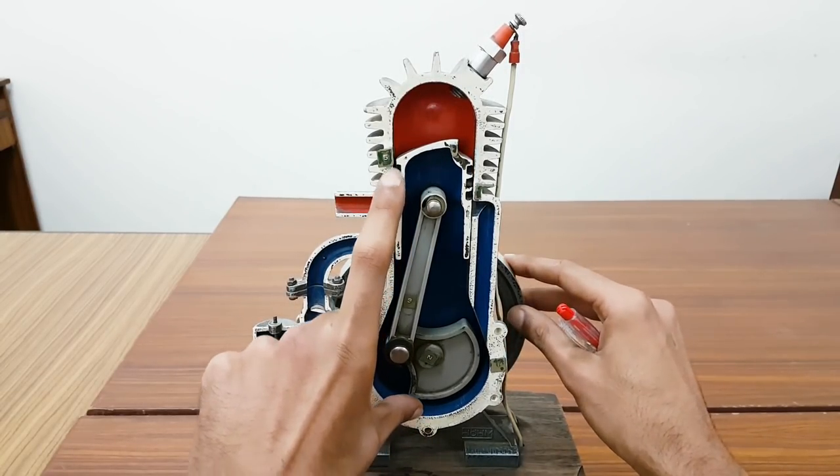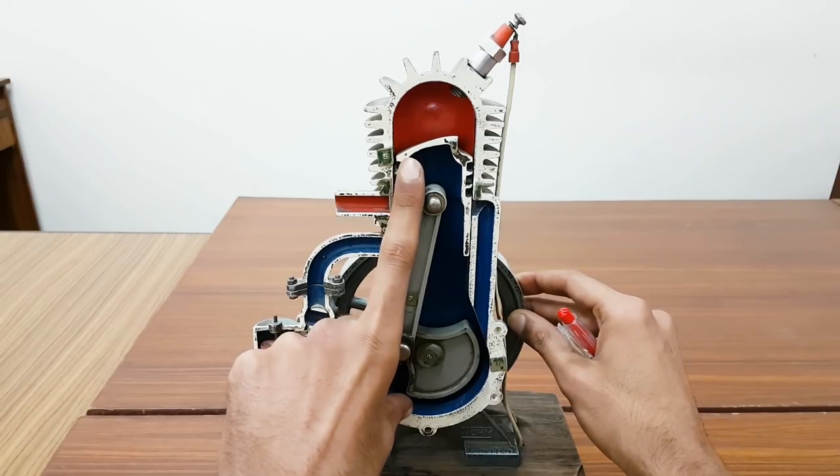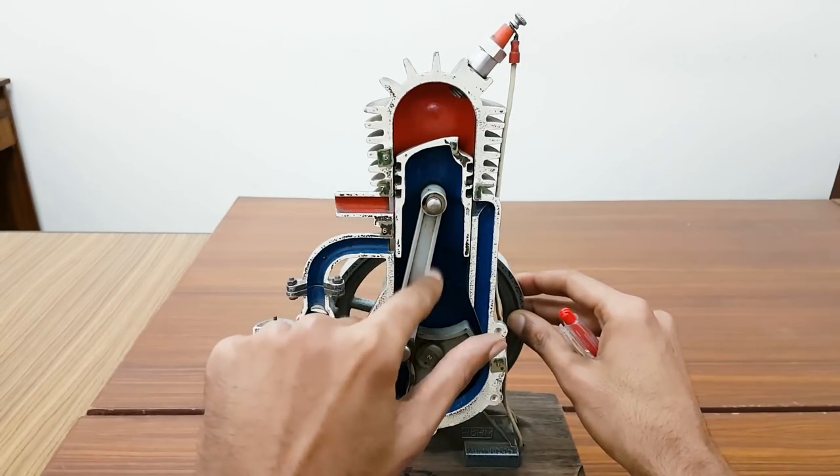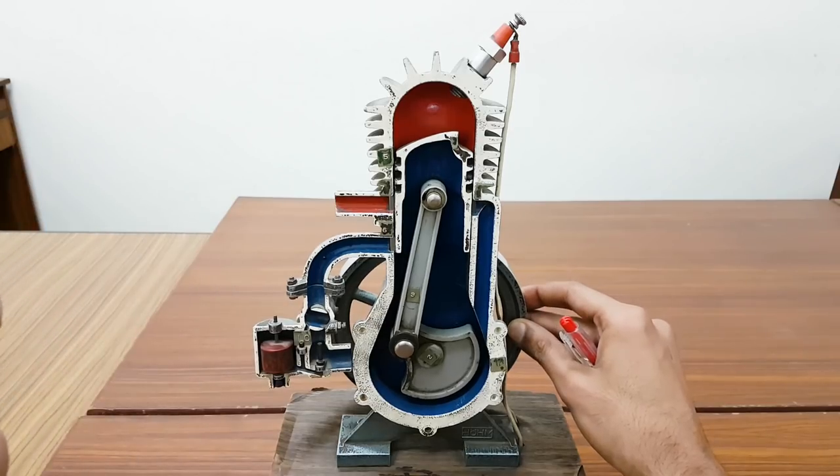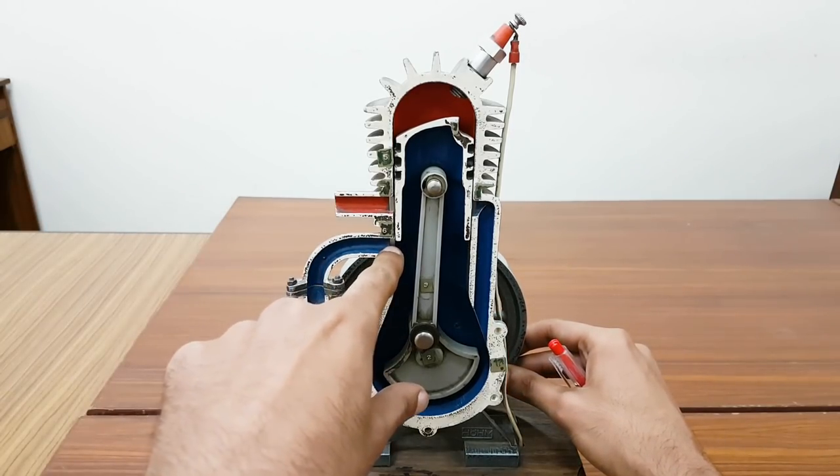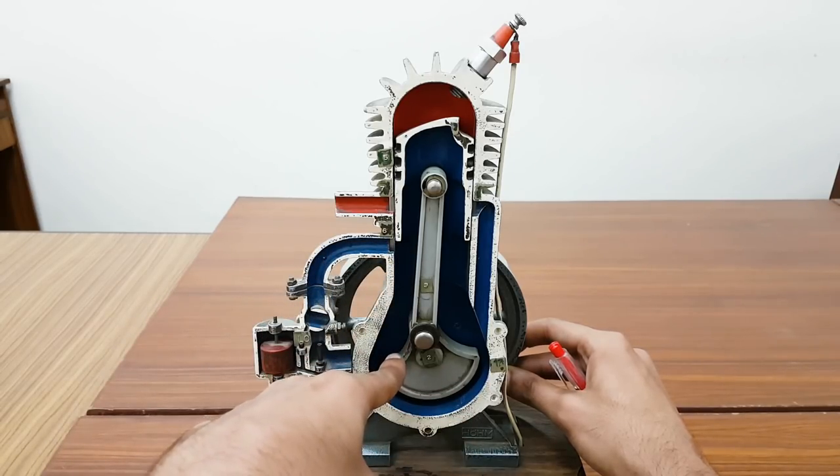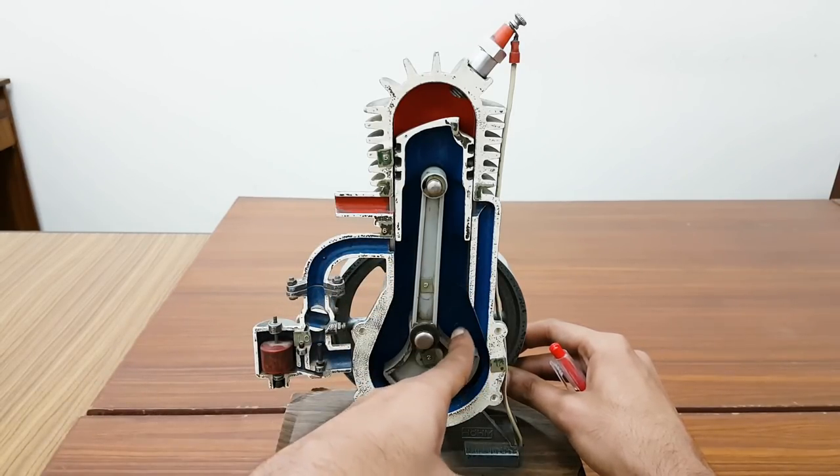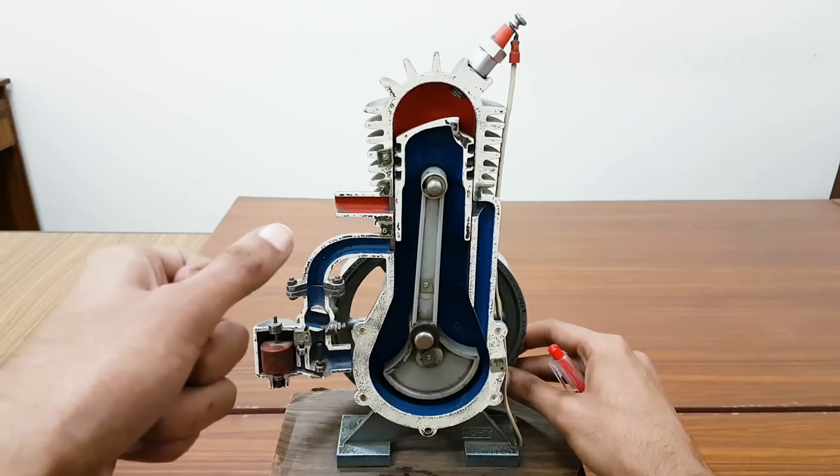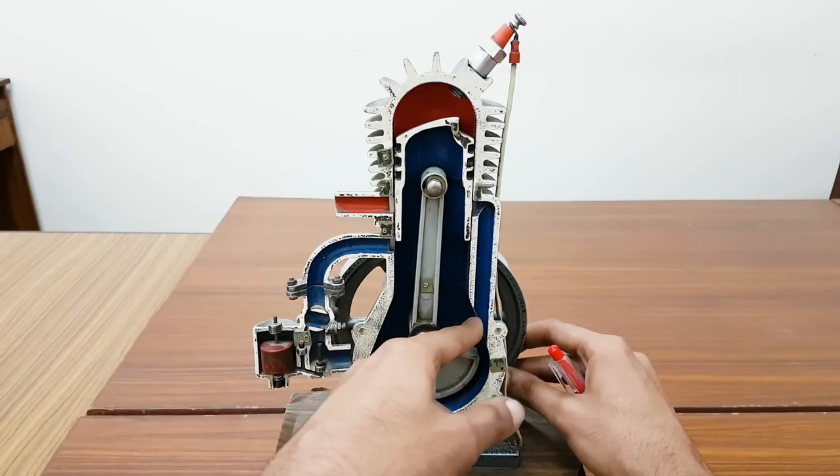When the piston moves up, as you can see, this blue color volume increases. When the volume is increasing, it makes a vacuum over here. When the piston arrives at this part, you see the port is open. That vacuum is filled by the air fuel mixture coming through the carburetor, and this is how your crankcase fills up with air fuel mixture.